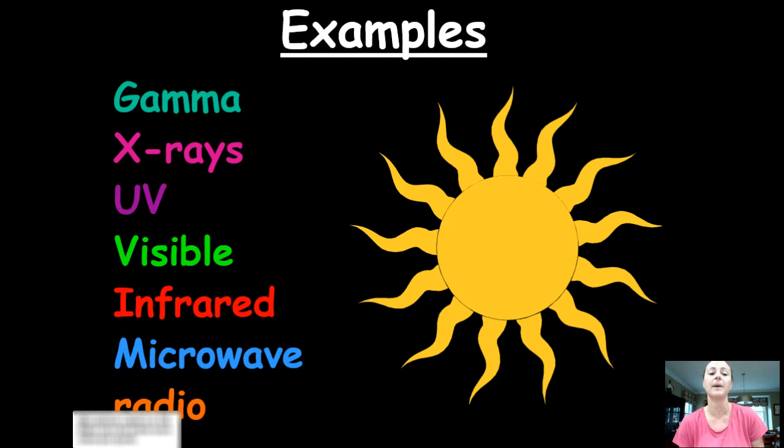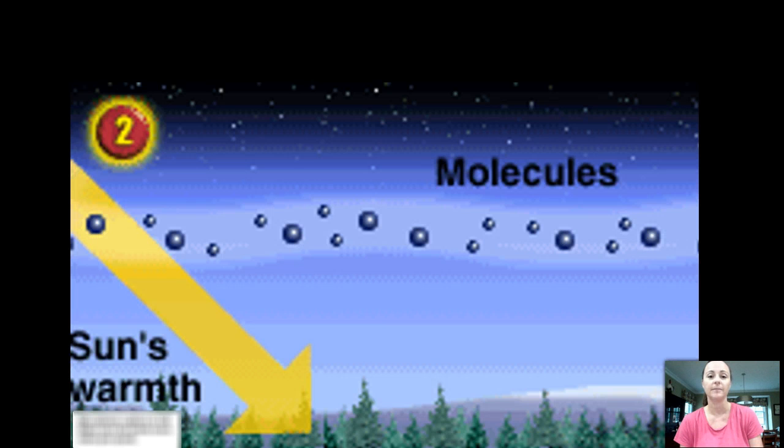Now the examples that we can list are all of the energies that we have in our reference table on that electromagnetic spectrum: the gamma rays, the x-rays, the UV rays, visible light, infrared heat, microwave, and radio waves. These all travel through what we call radiation, and here's a picture of the Sun coming down, shining its energy.